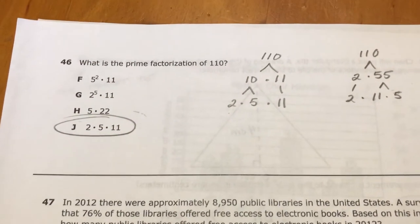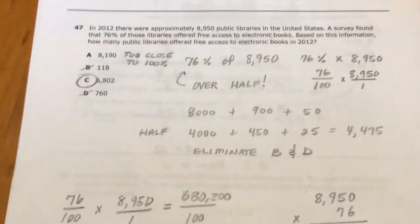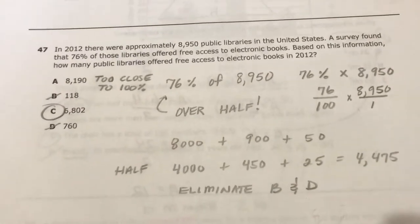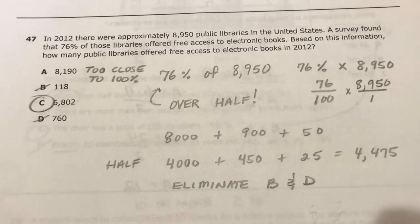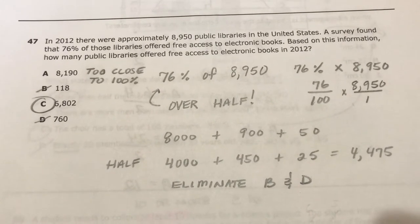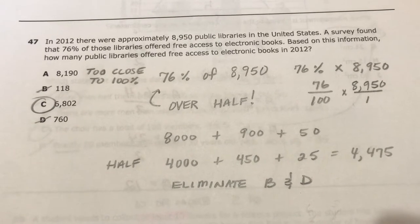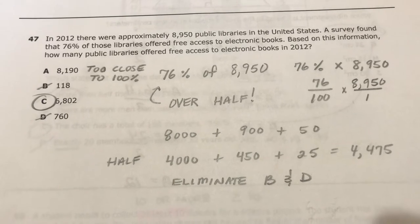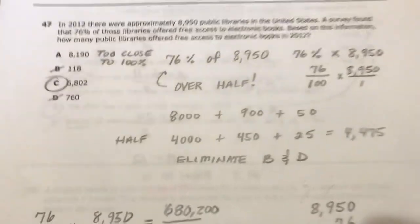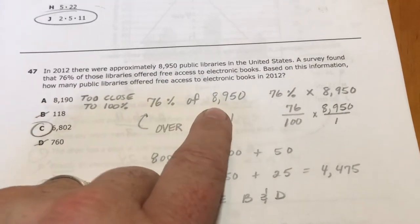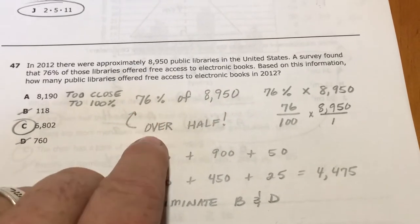47, real easy question if you're using common sense. Says in 2012 there were approximately 8,950 public libraries in the United States. A survey found that 76% of those libraries offered free access to electronic books. Based on this info, how many libraries offered free access to electronic books? So they're saying 76% of 8,950. Well, you know 76% is over half.